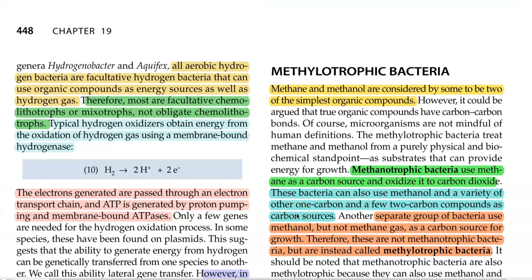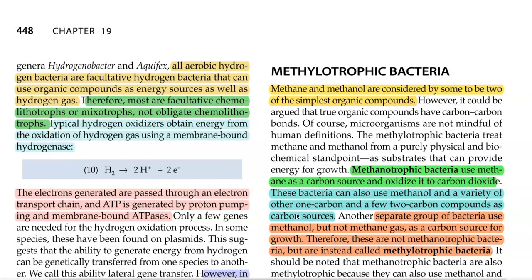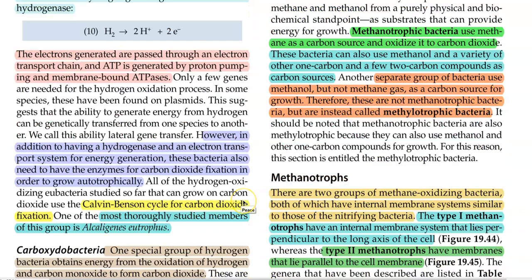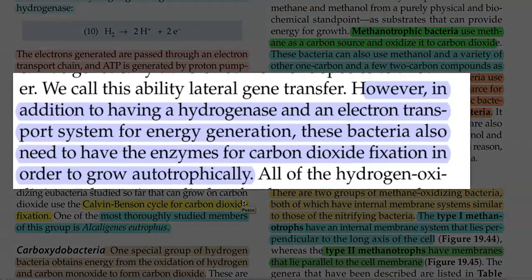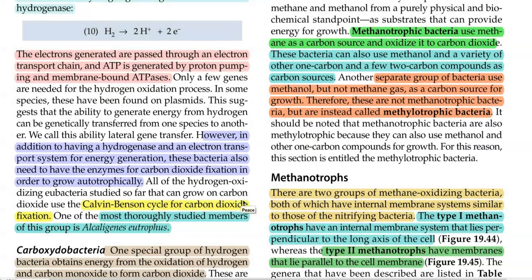A typical hydrogen oxidation process to obtain energy is shown here, mediated by the hydrogenase enzyme present in the membrane. Whatever reduced equivalents or electrons are generated during this process are channeled into the electron transport chain. With the help of proton pumping and membrane-bound ATPases, ATP is synthesized. However, in addition to having hydrogenase and an electron transport system for energy generation, most hydrogen-oxidizing bacteria — especially those autotrophic for hydrogen utilization — also require additional enzymes for the carbon fixation process, that is, for fixing carbon dioxide into cell carbon autotrophically.